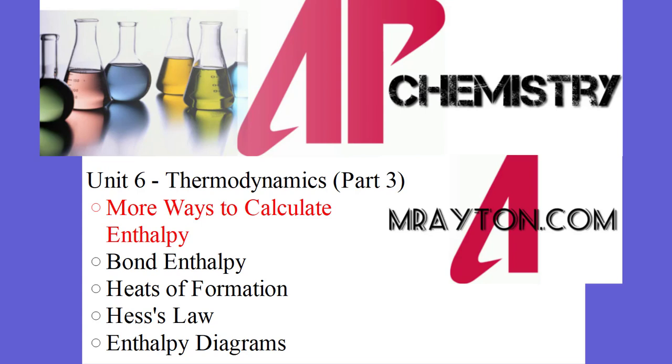This is more ways to calculate enthalpy. The first session we looked at delta G, delta H, and delta S, what each one of these three means and how they're put together. The second session we were taking a look at how do we calculate enthalpy from a calorimetry experiment. And then there's actually four more ways to calculate enthalpy. That's bond enthalpy, heats of formation, Hess's Law, and enthalpy diagrams. So let's take a look at each one of these things.